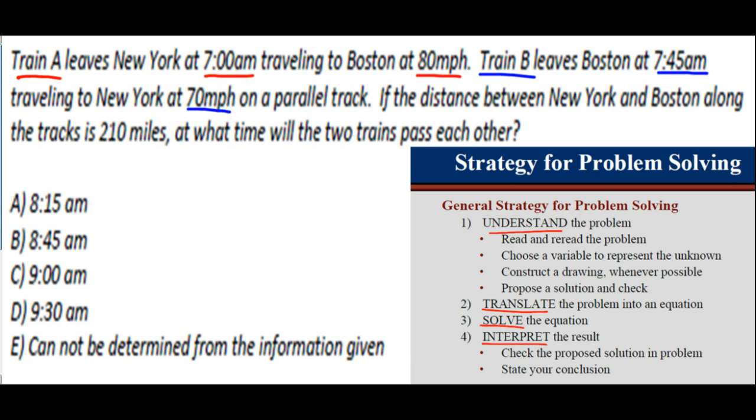Traveling at 70 miles an hour, and then finally the distance between the two cities is 210 miles. Now why didn't I underline New York or Boston? Because it's really kind of irrelevant information. We could be traveling between any two cities in the world, and these could also be cars as well or these could be planes. I underline the important information and we want to find out what time do the trains pass each other.